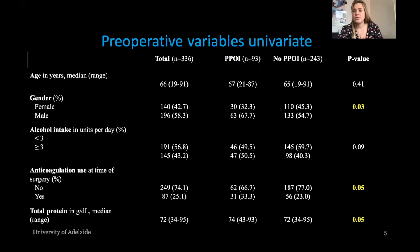The results of the univariate analysis: preoperative variables that showed to have an effect on PPOI were male gender — an already known risk factor — the use of anticoagulants at time of surgery, and higher levels of preoperative total protein.